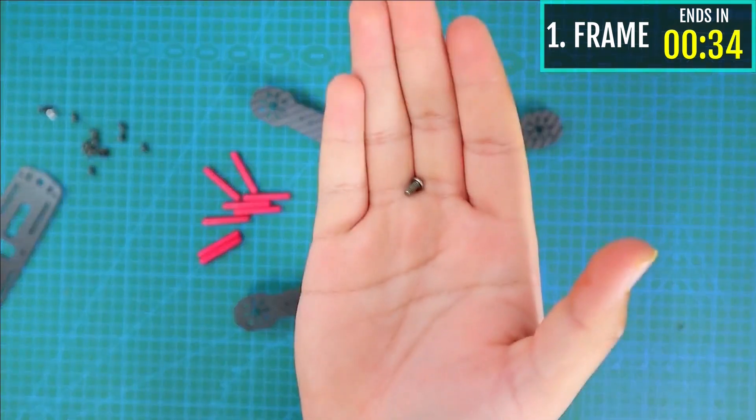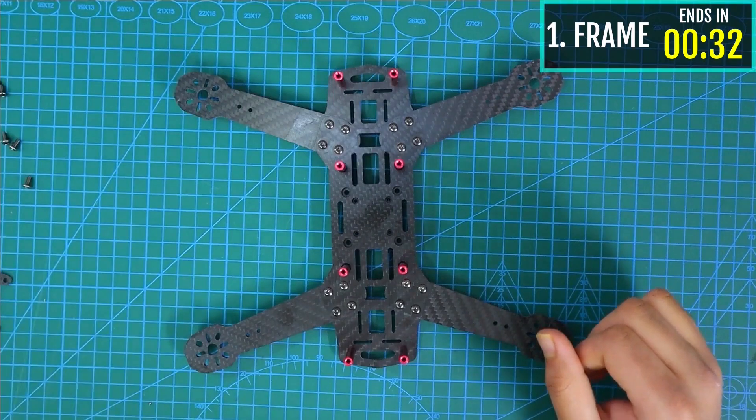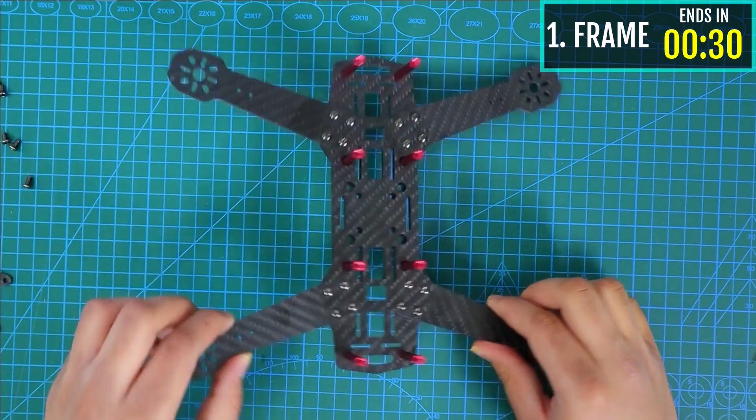Then, we are going to screw the poles and the top of the part with the small screws which are included in the frame kit.